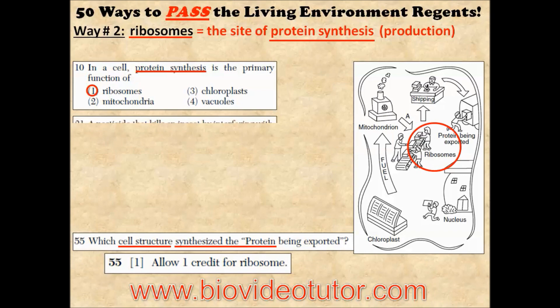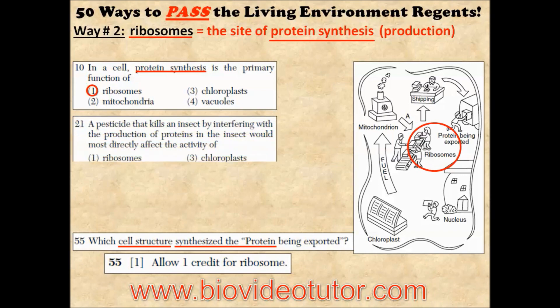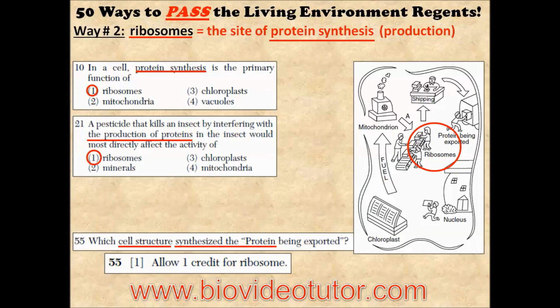Now, what happens if a pesticide kills an insect by interfering with the production of proteins? It would most directly affect the activity of ribosomes.